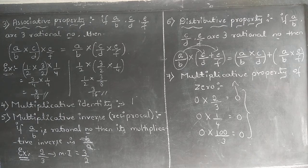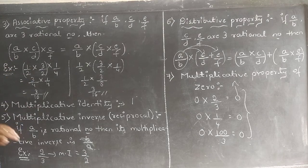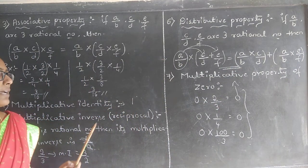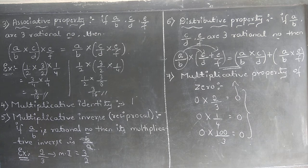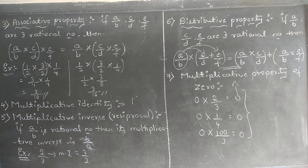Let me give you a quick recall of all the properties. First: closure property — if I multiply any two rational numbers, the result is again a rational number. Next: commutative property — A/B into C/D equals C/D into A/B. Next: associative property — the bracketing can be changed. Multiplicative identity is 1. Multiplicative inverse or reciprocal means making numerator as denominator and denominator as numerator. Distributive property is very important and will be used when solving problems — mug up this formula. Finally, multiplicative property of 0: 0 into anything is always 0, so you can directly write the answer as 0 without multiplying numerator and denominator. Students, copy all these things into your classwork and make a note of them.